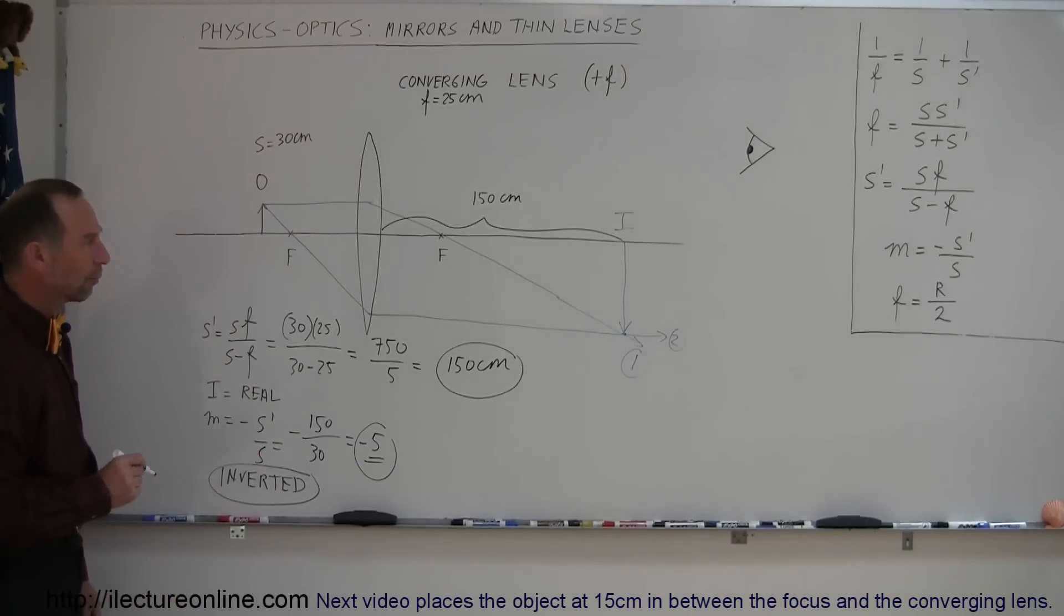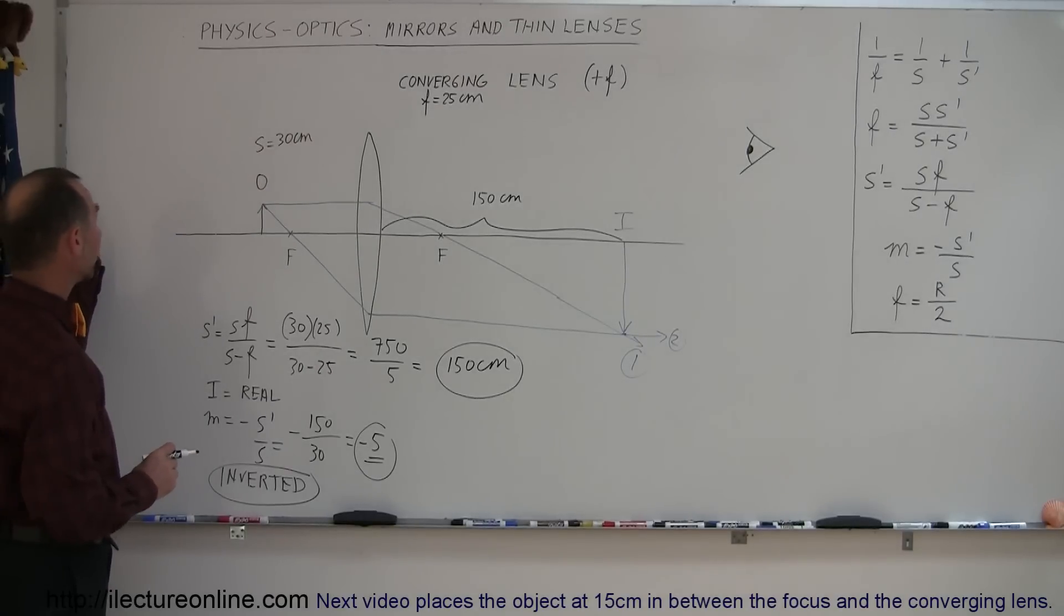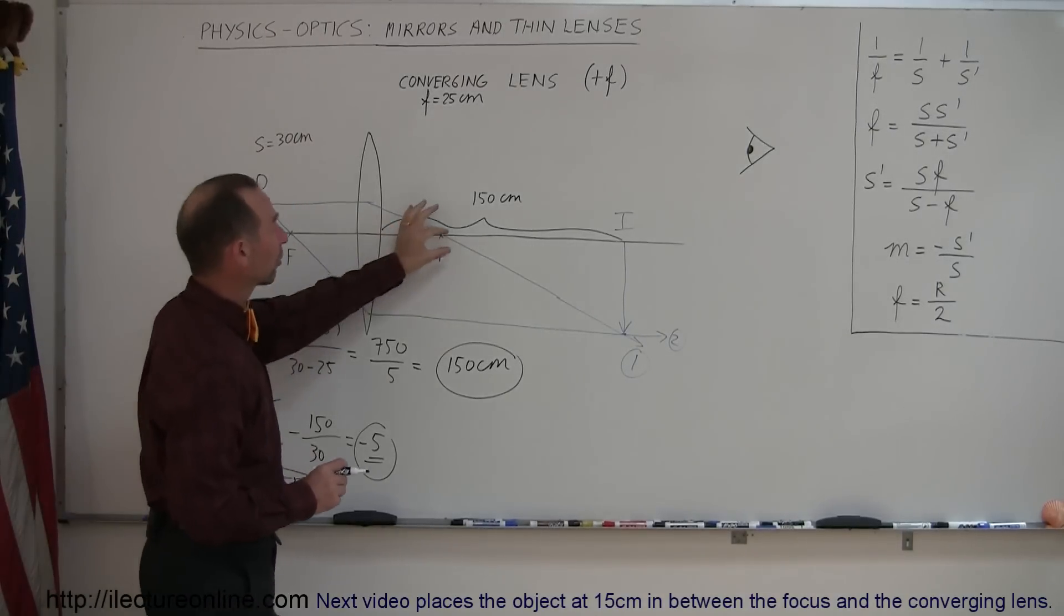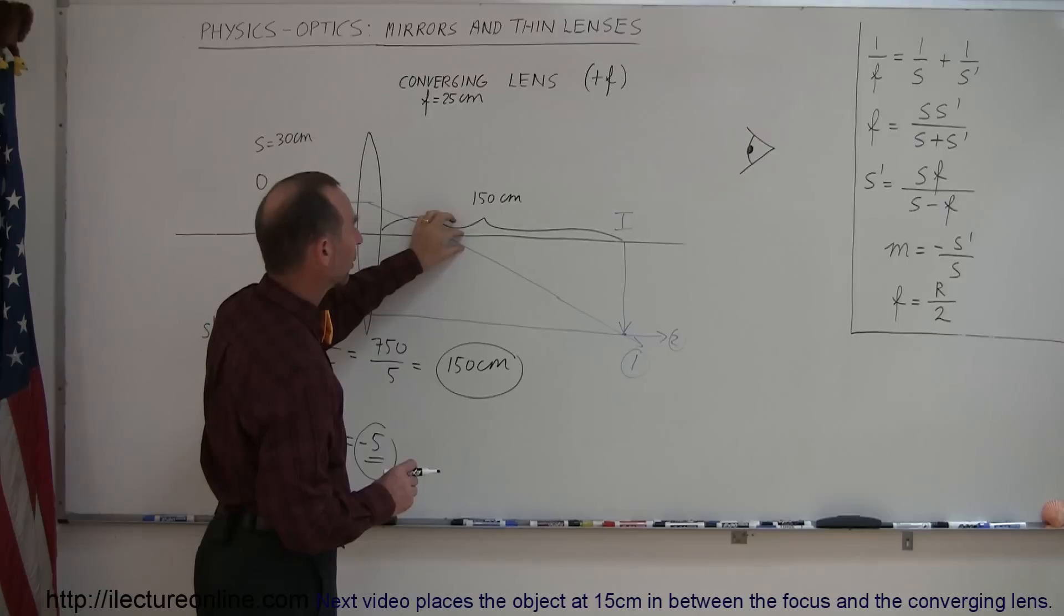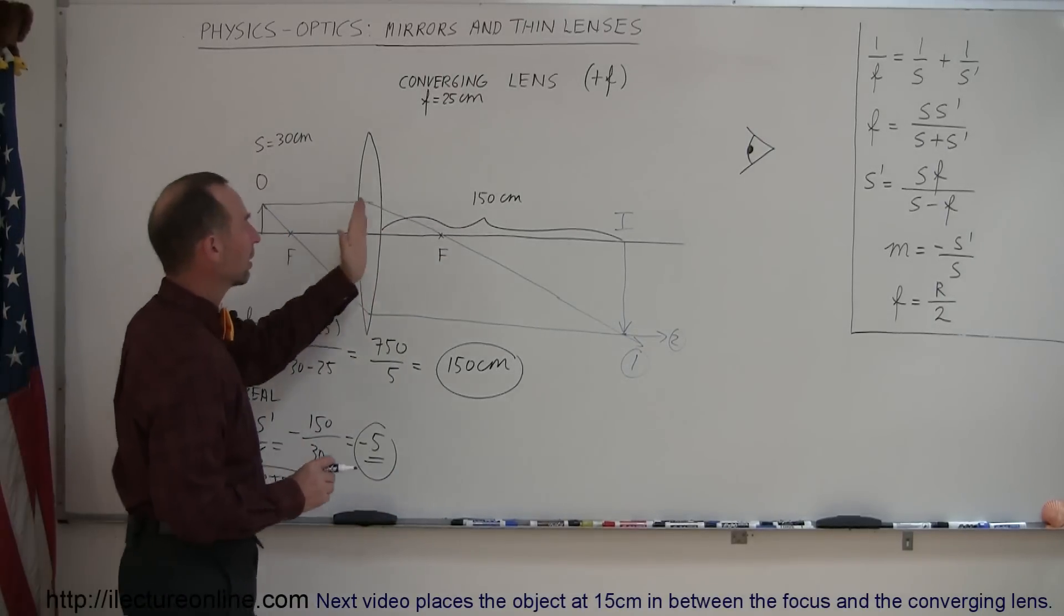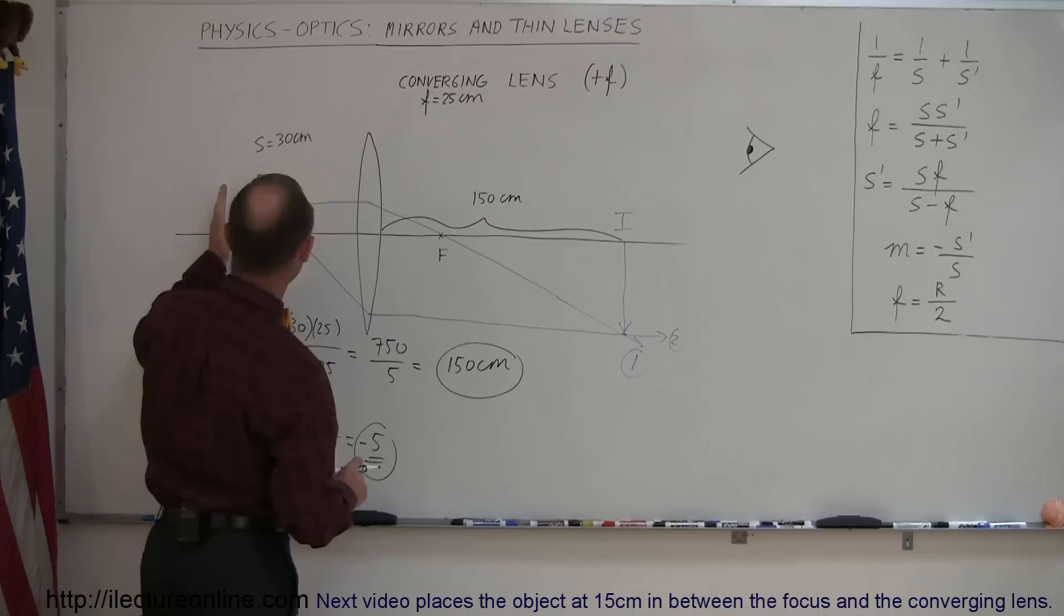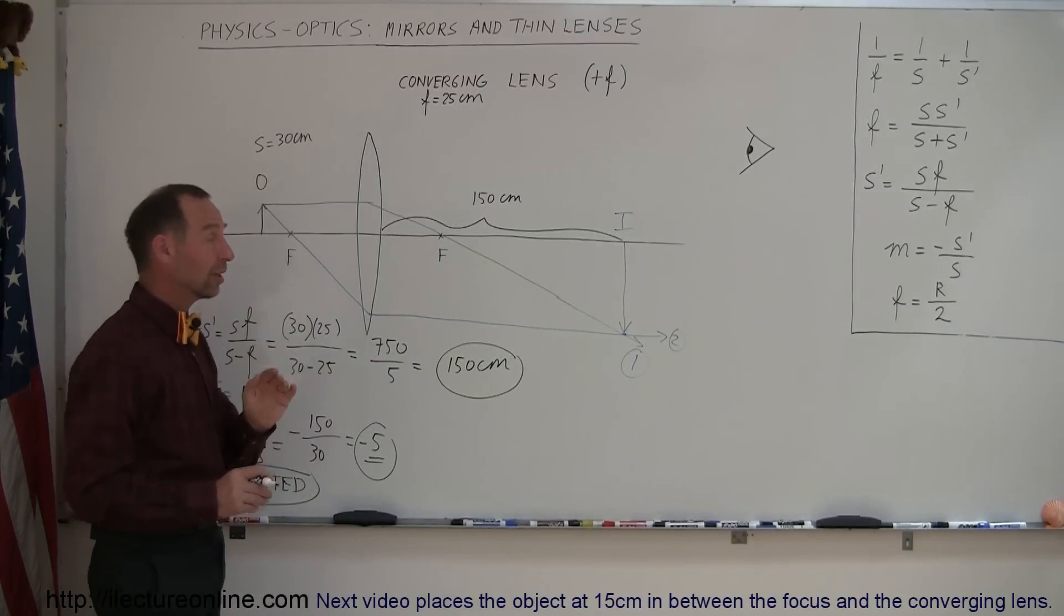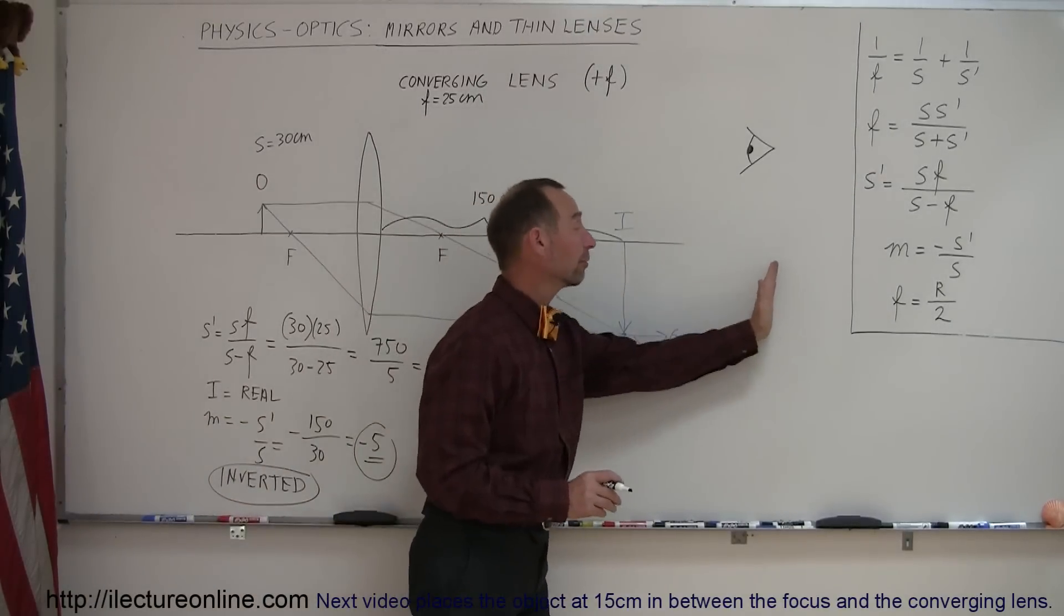So far we've found a real image in each case. So when the object was far away from the lens, the image was very close to the focal point right here, but it was upside down, it was real. As we move the object closer, the image moved farther out. As the object gets very close to the focal point, you can see how the image continues to move farther and farther and farther out.